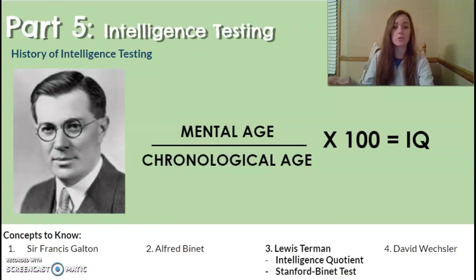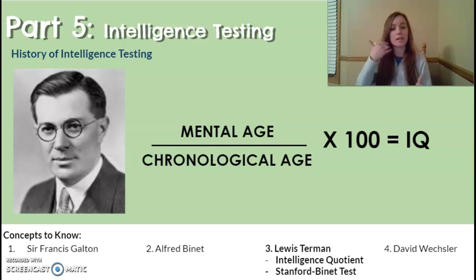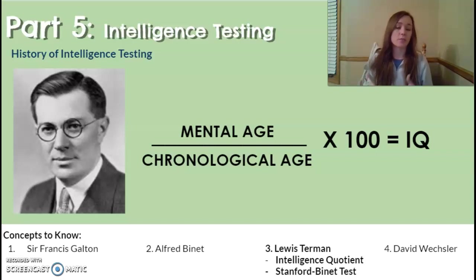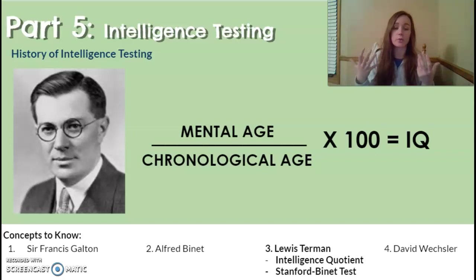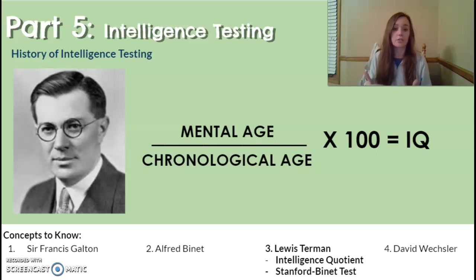This leads to Lewis Terman, an American who took Binet's way of finding mental age and turned it into an intelligence score — something Alfred Binet would not have been excited about and did not want. Terman worked at Stanford and created an intelligence test with a score to identify your intelligence. He used the formula: mental age divided by chronological age, times 100, which equals your intelligence quotient. He called this test the Stanford-Binet.